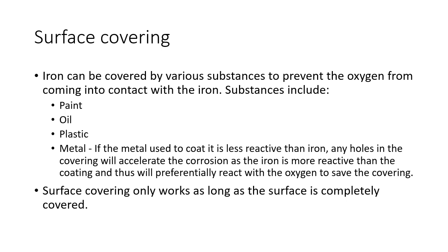The first principle is surface covering. Iron can be covered by various substances to prevent oxygen from coming into contact with it. If you don't have oxygen or water coming into contact with the iron, you can't have that transfer of electrons occur. Substances you can use include paint, oil, plastics, and metal. If the metal used to coat is less reactive than iron, any holes in the covering will accelerate corrosion, as the iron is more reactive than the coating and will preferentially react with oxygen.